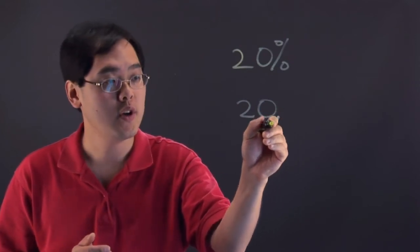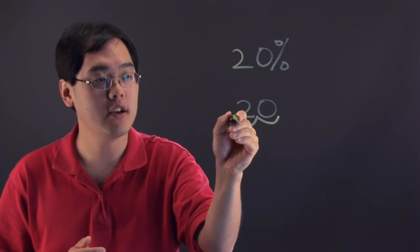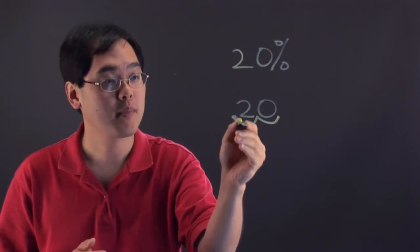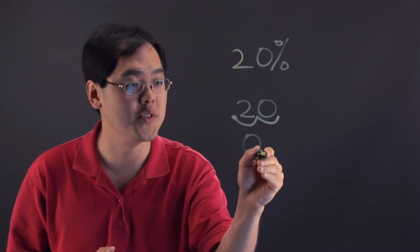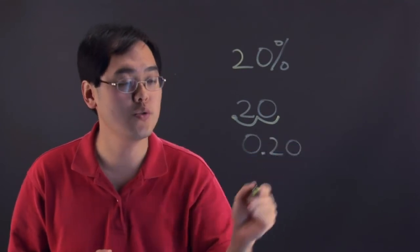So you go one here, one here, so in actuality 20% has an actual value of 0.20.